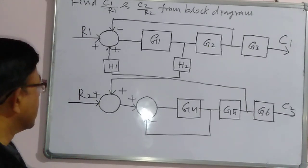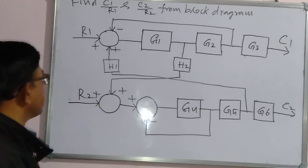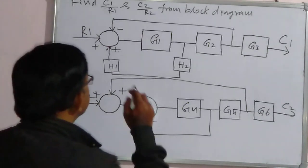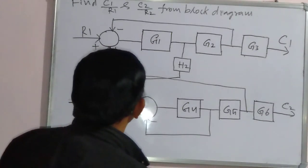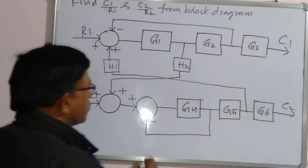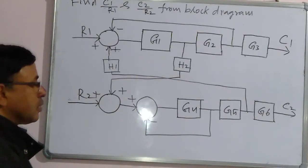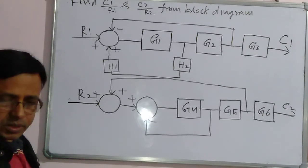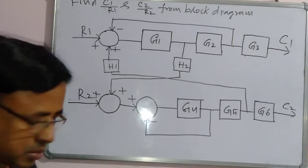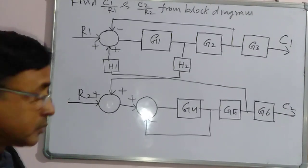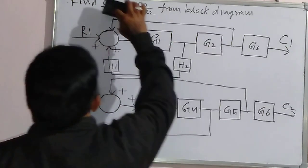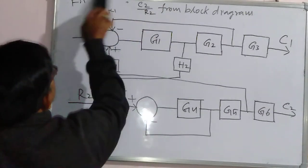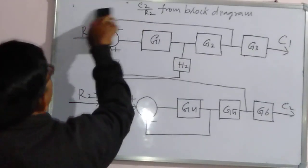Another combination we can find out is C1/R2 and C2/R1 — any combination we can find out. Let us solve this problem. First, find out C1/R1.